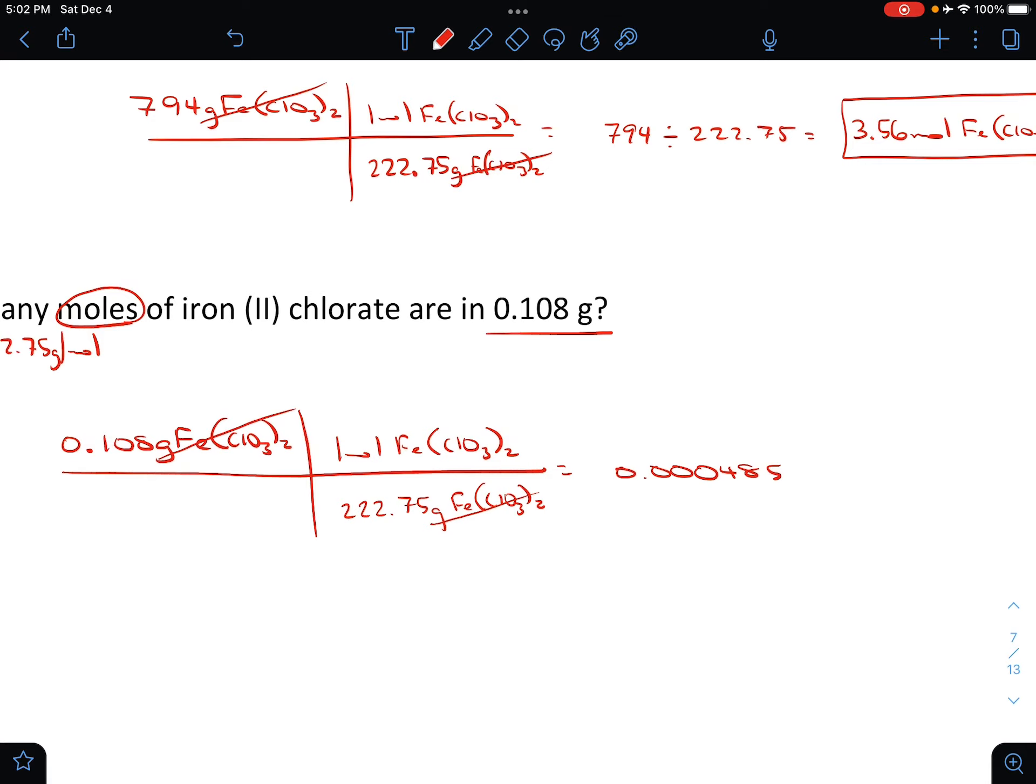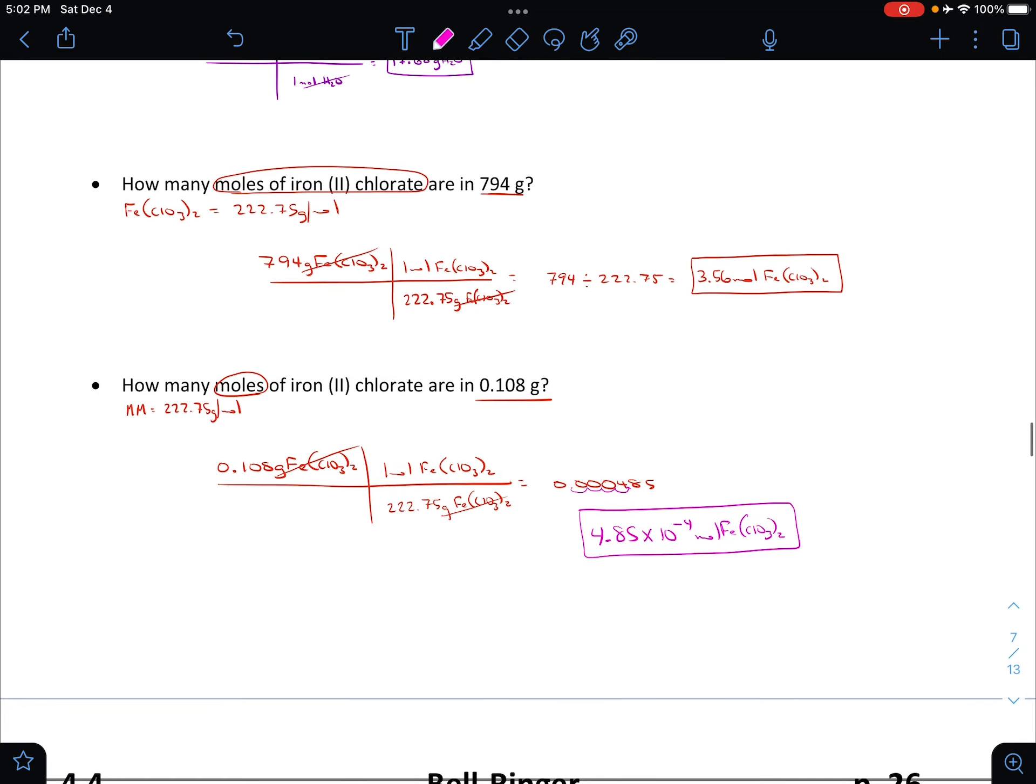So let's go ahead and put that in scientific notation, just a quick review of that because it's been a while. One, two, three, four, so we're going to say 4.85 times 10 to the negative fourth, and then we've got moles of Fe(ClO3)2. And there we have it. That should be fairly simple. Okay, see you next video.